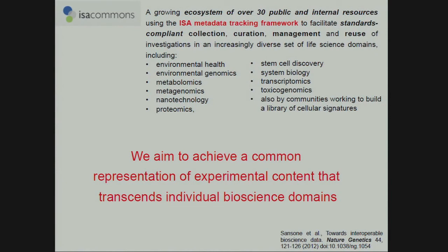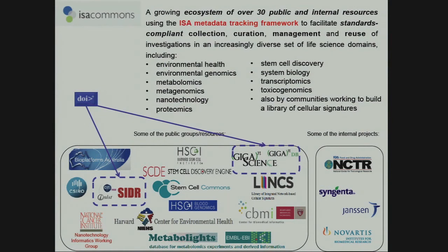We cannot say we have solved everything, but we have worked in this area for a very long time with a large number of collaborators. We put together what we call the ISA Commons — an ecosystem of 30 public and internal resources using the ISA metadata tracking framework, which is general-purpose enough to describe any type of experiment, tries to use community standards, provides a set of tools so information can be captured and stored locally, then submitted to different public repositories in different domains. Notable members include the CIDR effort in France, GigaScience, BioPlatform Australia, a stem cell group at Harvard, and the metabolomics repository MetaboLights.